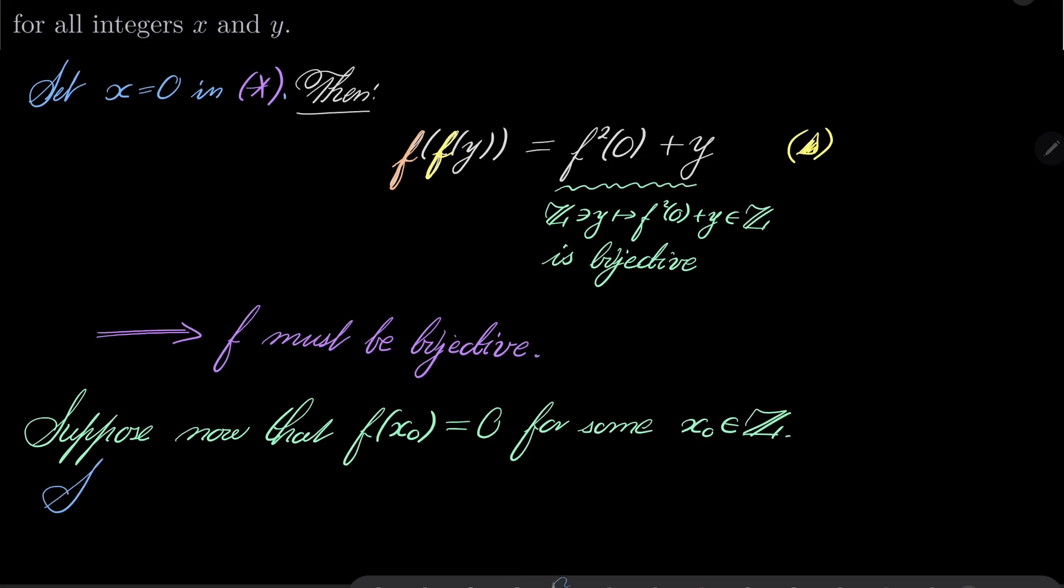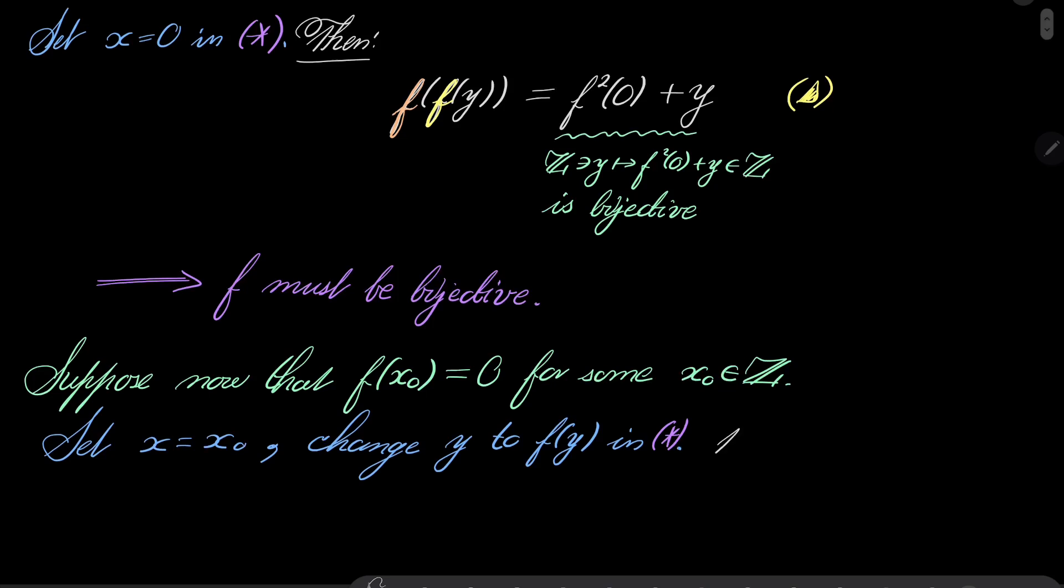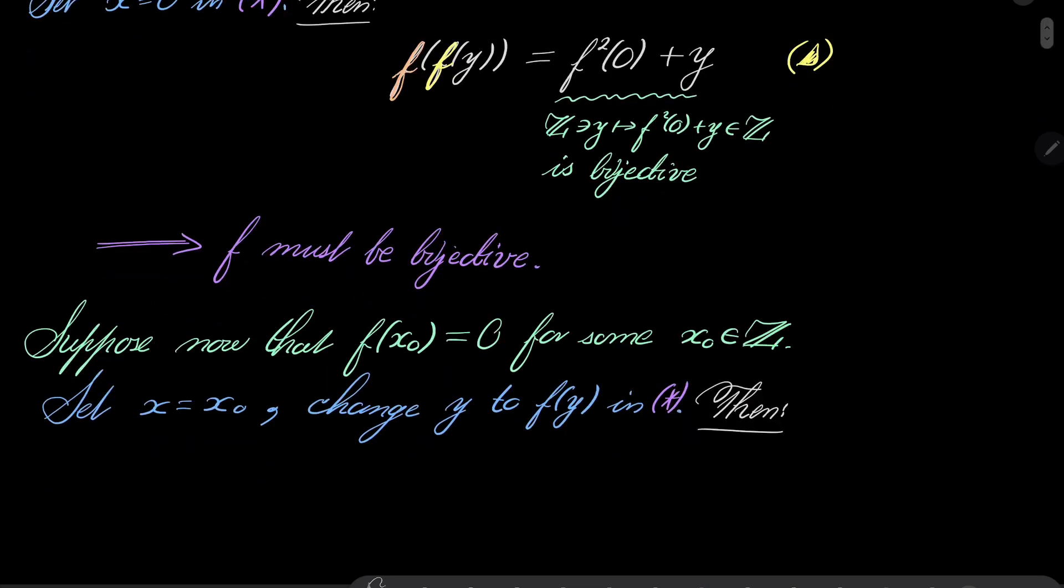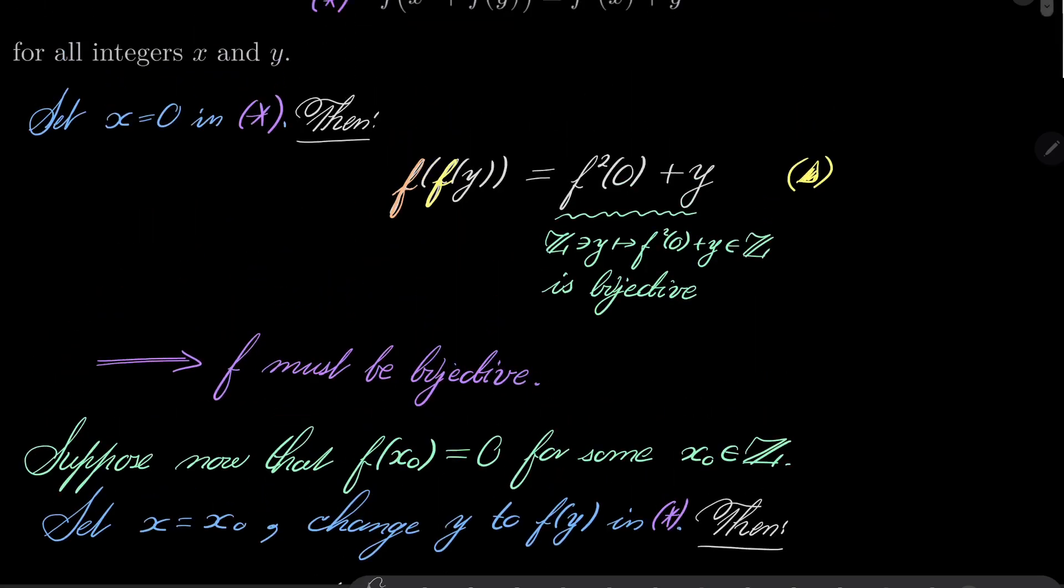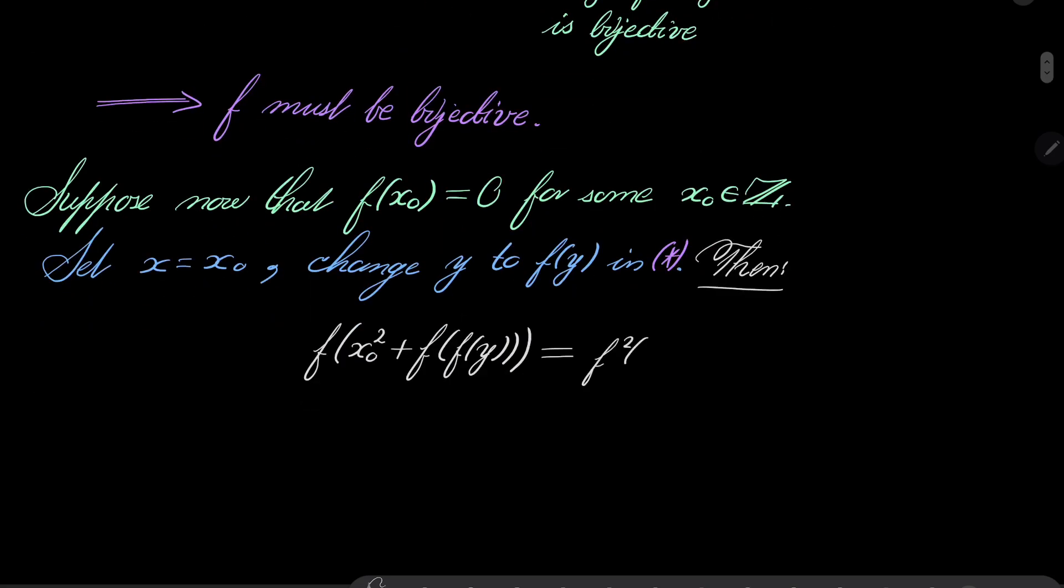And now let's set x to be x0 and let's change y to f of y in our condition asterisk. What then? Then we have f of x0 squared plus instead of f of y this time we have f of f of y, and on the right-hand side we have f squared of x0, instead of y we have f of y.